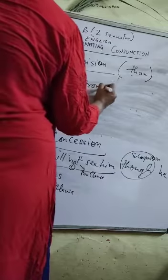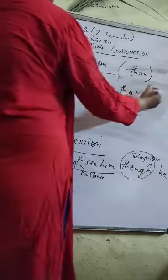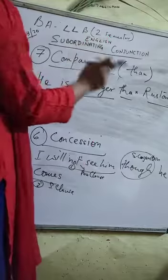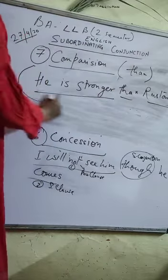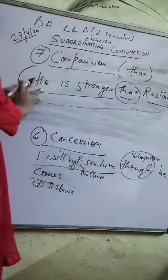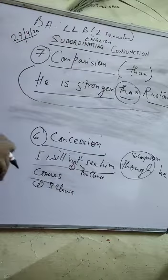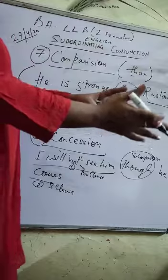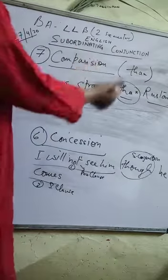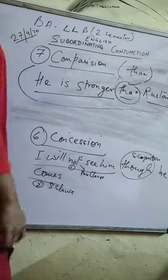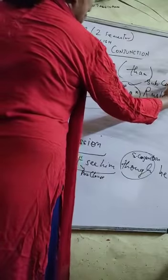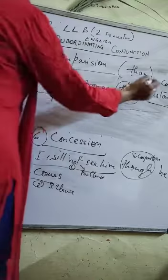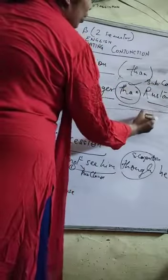'He is stronger than Rustom.' तो ये stronger है than Rustom. अब हम Rustom को भी तो नहीं लिखेंगे — Rustom is stronger — हमने एक ही sentence में 'than' को लगाकर दो sentences को जोड़ा है. आप इसे ध्यान दे करके देखें — he is stronger than Rustom, यानि कि Rustom is more strong. 'Than' हमारा subordinating conjunction हो जाएगा — comparison subordinating conjunction. 'He is stronger' हमारा principle clause हो जाएगा, और 'than Rustom' हमारा subordinating clause में आएगा.